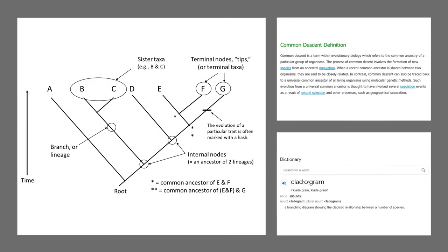Cladograms and phylogenetic trees mean virtually the same thing. They are both branching diagrams showing the cladistic relationship between a number of species. You can see an example of it in the image on the left.